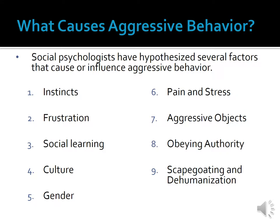Over the years, social psychologists have hypothesized several factors that cause or influence aggressive behavior. They are interested in discovering these factors because this knowledge would have potentially large and important social policy implications. If social psychologists can discover why people act aggressively, then perhaps policymakers can develop social policies for lessening aggressive behavior in society as a whole. I'm going to talk about nine factors in this lecture: instincts, frustration, social learning, culture, gender, pain and stress, aggressive objects, obeying authority, and scapegoating and dehumanization.